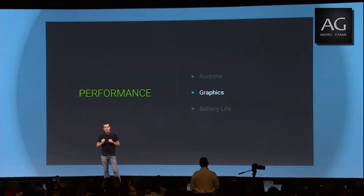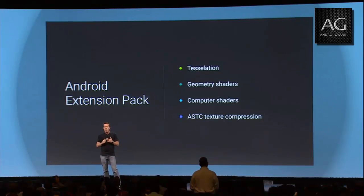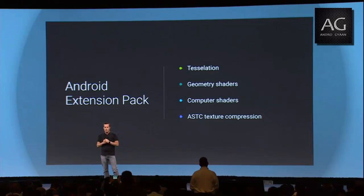Historically, mobile graphics has lagged desktop by virtue of the fact that mobile GPUs are smaller and more power constrained. But that's changing quickly. Mobile GPU performance is catching up with console graphics and even PC graphics. So in L, we specifically wanted to close the gap between desktop DX11-class graphics capabilities and mobile. And we're doing that with something we call Android Extension Pack. We set out to work with GPU vendors including NVIDIA, Qualcomm, ARM, and Imagination Technologies, and together we defined the Android Extension Pack — it's a set of features.